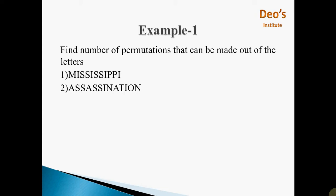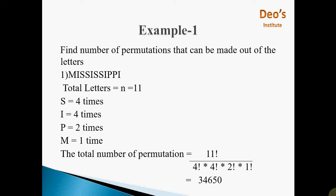Find the number of permutations that can be made out of the letters of MISSISSIPPI. There are total 11 characters, so n = 11. S is repeated 4 times, I is repeated 4 times, P is repeated 2 times, and M is repeated 1 time. So the total number of permutations is 11! divided by (4! × 4! × 2! × 1!).